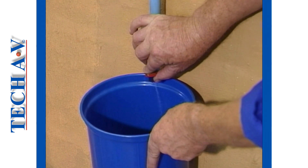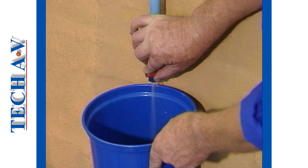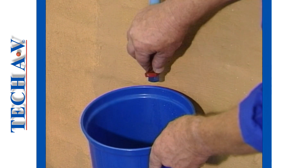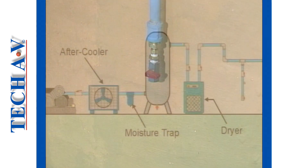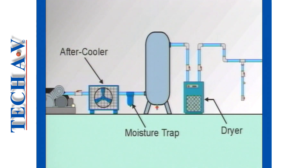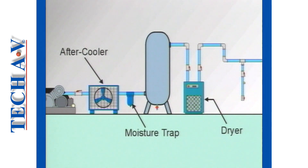Opening this valve releases the condensate that settles within the pipe work. Some moisture, however, will still remain in the air line. Various devices, such as moisture traps, after coolers, and dryers, are sometimes included into a line in order to remove or trap moisture, depending on the dryness of air required by the operating units. We shall look at some of these devices in Module 4 of this series.